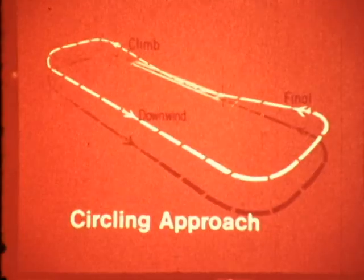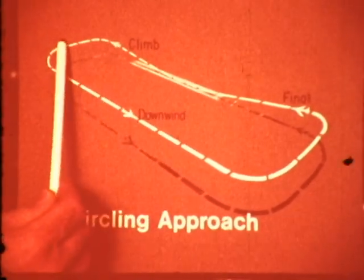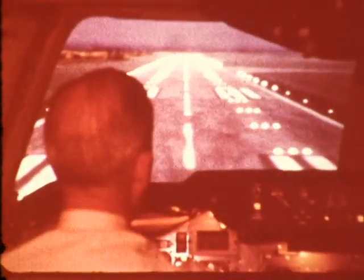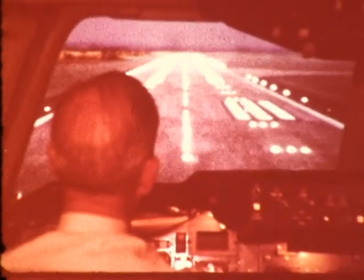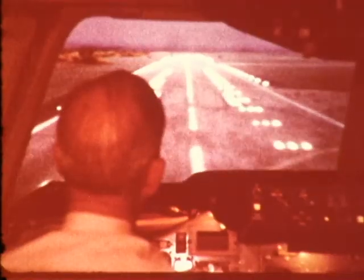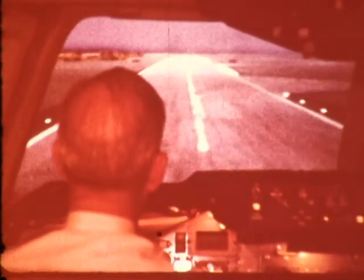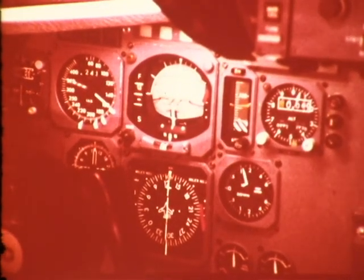Welcome aboard. Our first maneuver will be the circling approach as demonstrated by the takeoff and climb, downwind leg, base leg, turn onto final, and land. During the takeoff roll, our captain uses ground reference cues to maintain runway alignment. He checks his instruments to establish a precision climb attitude, positive rate of climb, gear up. During climb out, his course alignment is maintained by ground reference.